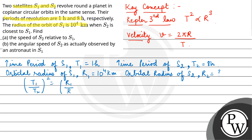T1 = 1, T2 = 8, R1 = 10^4. So R2^3 = 8^2 × 10^4 = 64 × 10^12. Therefore R2 = cube root of 64 × 10^12 = 4 × 10^4 km.